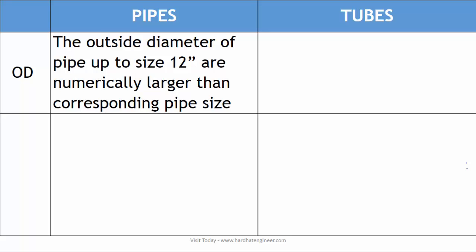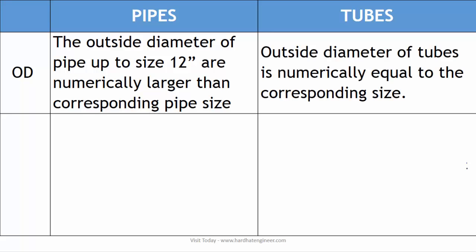Up to 12-inch NPS, pipe outside diameter is numerically larger than the corresponding pipe size, and above 12 inches it is the same as the pipe size. Whereas for tubes, outside diameter is always equal to the size of the tube.